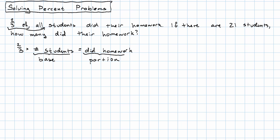When we say two-thirds of all students did their homework, we mean that all students form a base and a portion of them, two-thirds, did their homework. So in this problem, two-thirds times 21 is 14. 14 students did their homework.